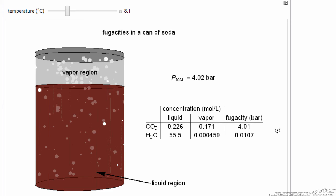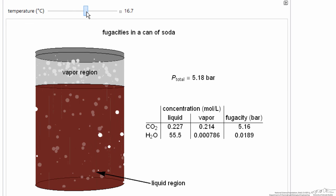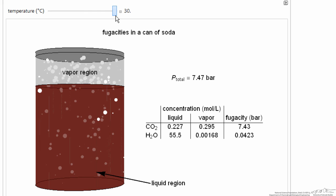Now if we look at the ratio of fugacities, the ratio of CO2 to water is about 400. As I keep raising the temperature, you can see that this ratio now is about 200.